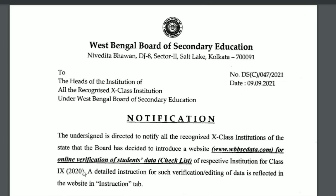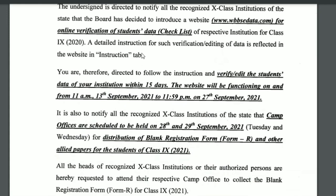The 2019 data online verification checklist is also covered. You are therefore directed to follow the instructions and verify or edit the student's data of your institution within 15 days. The website will be functioning from 11 a.m. on 13 September 2021 to 11:59 p.m. on 27 September 2021.